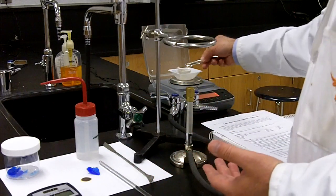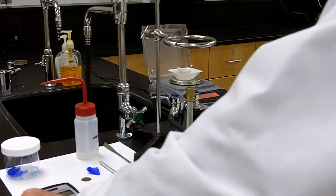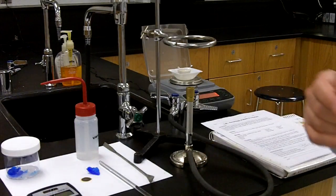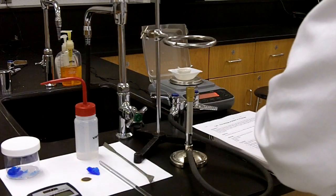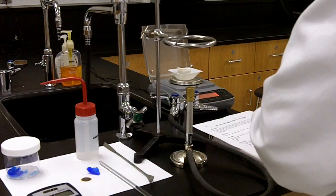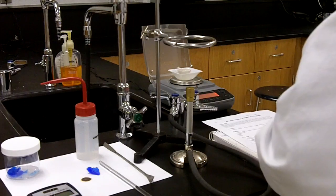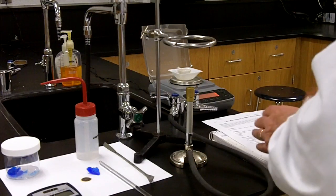So what I'm going to do is place a small piece of copper 2 sulfate pentahydrate into the crucible, and I'll measure once again. And this time I get 12.70. So 12.70 grams for the mass of the crystal and the crucible before heating.